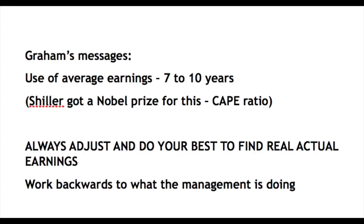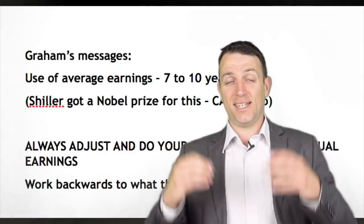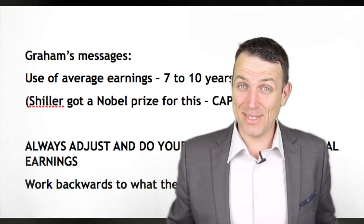Graham's key messages are: always use average earnings over 7 to 10 years, because that's the only way to see what's really going on with the company. Always use a long-term perspective — it's interesting that Shiller got a Nobel Prize for this; he probably just copied Graham. And always adjust and do your best to find real actual earnings — work backwards to adjust for what management is doing. Thank you for watching, looking forward to the comments, and I'll see you in the next video.